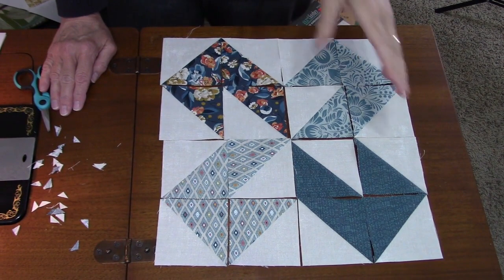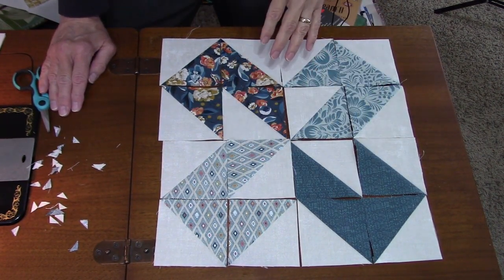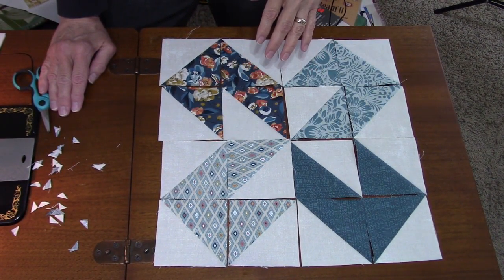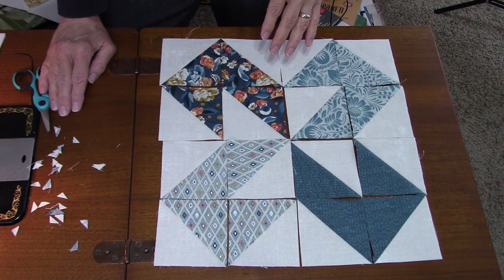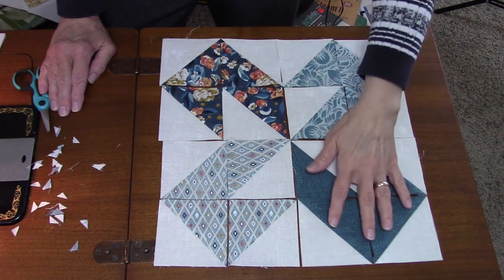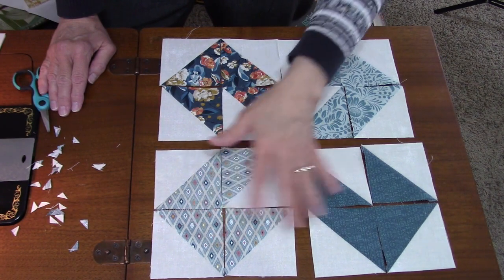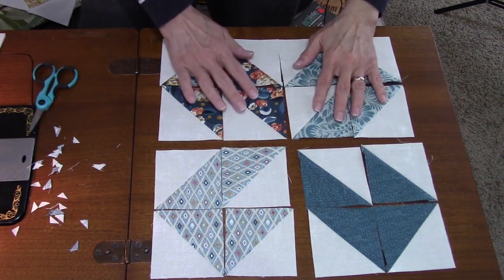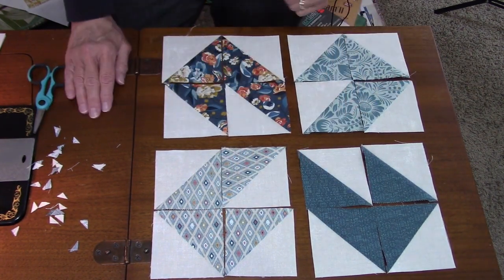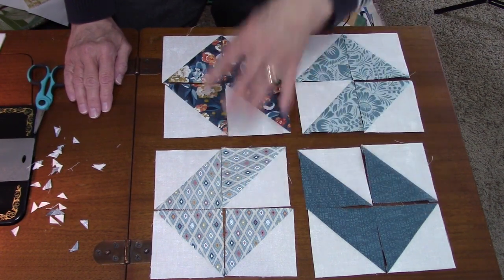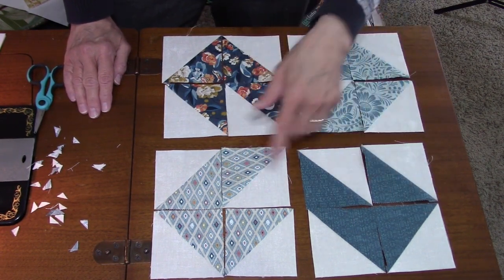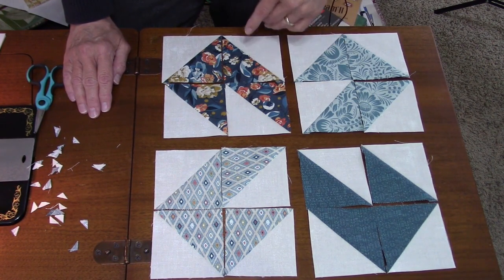Now you can go ahead and sew this in rows or you can sew it in quadrants, however you want to do that. So I'm going to go ahead and do it in quadrants. I'm going to make four patches. That way I think I'll help me keep all of the pieces in order, not get them mixed up. So I'll sew four sections and then I'll sew those sections into rows and then sew the two rows together.